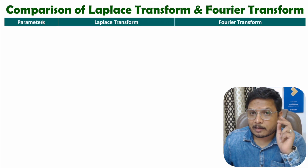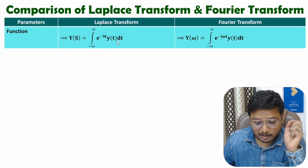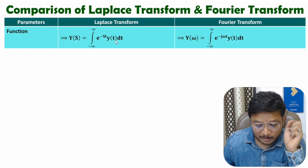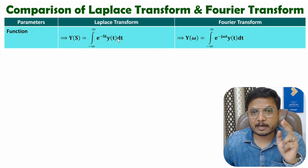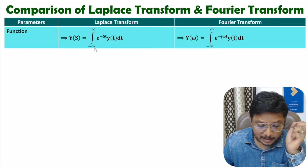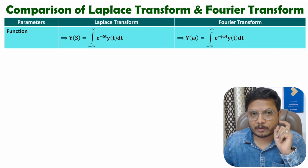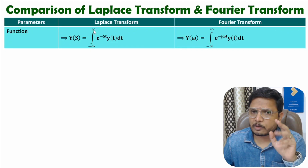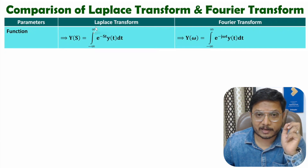Let us compare Laplace transform and Fourier transform with respect to functions. Consider we have a time domain function y(t). Then the Laplace transform of y(t) will be Y(s), where the integration has limits from minus infinite to plus infinite of e to the power minus st, y(t) dt. This limit corresponds to the bilateral Laplace transform. With the normal Laplace transform, the limit goes from zero to infinite, while with bilateral Laplace transform, the limit is from minus infinite to plus infinite.